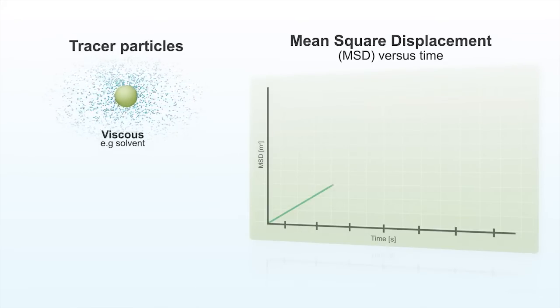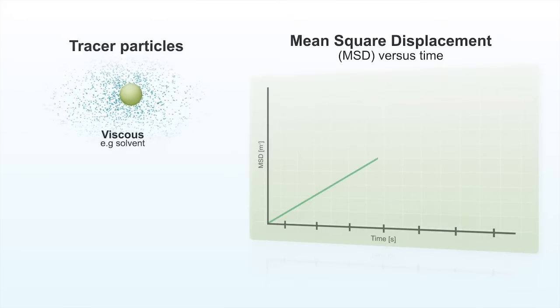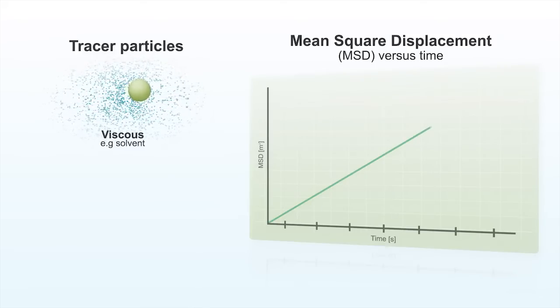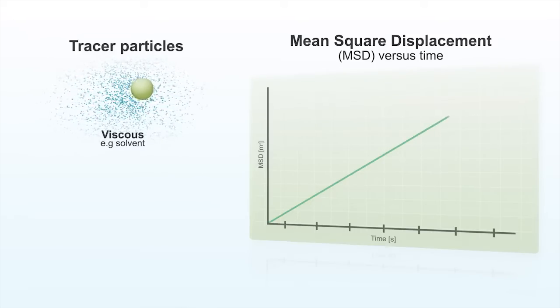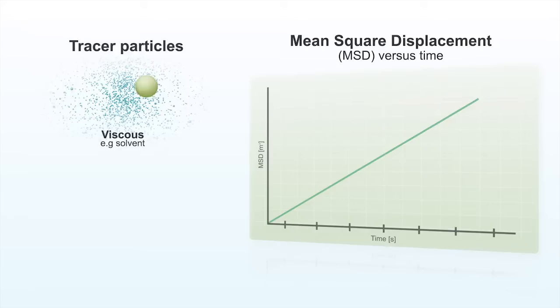Analogous to mechanical rheometry, a stress is applied by Brownian motion of the tracer particle and the deformation or strain is measured through changes in the tracer particle position with time. Thermally driven motion of the tracer particle is intimately linked to the rheological properties of the suspending fluid.